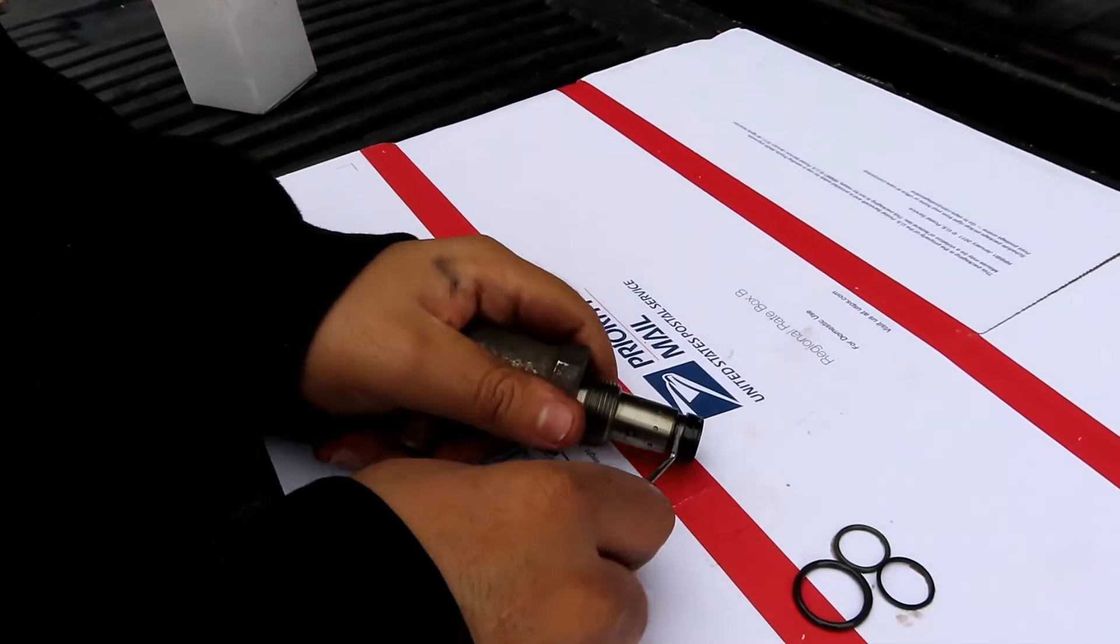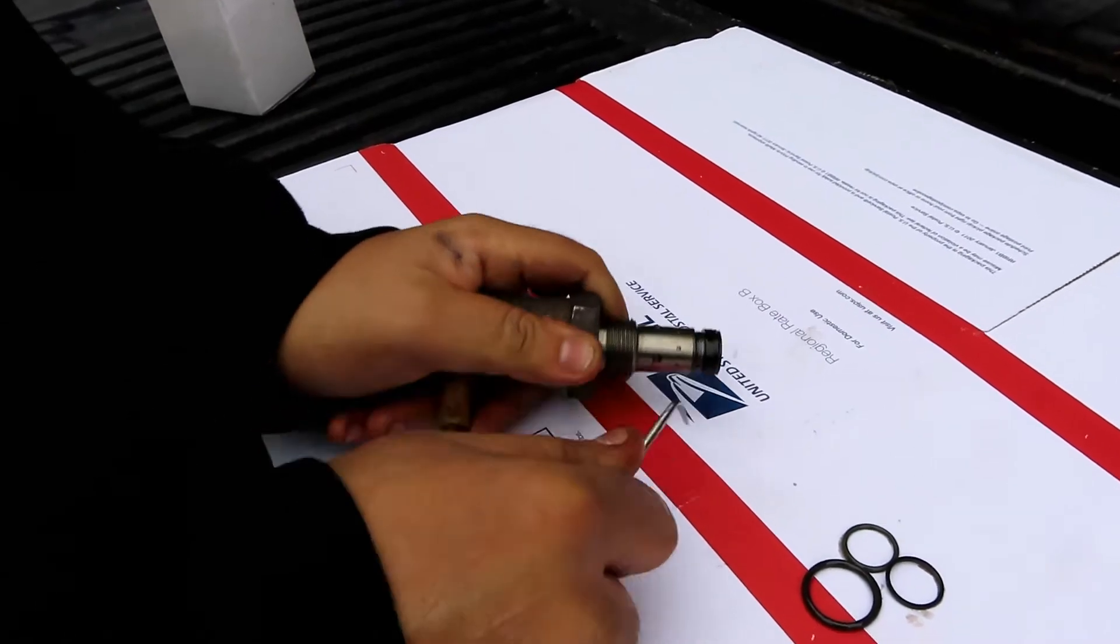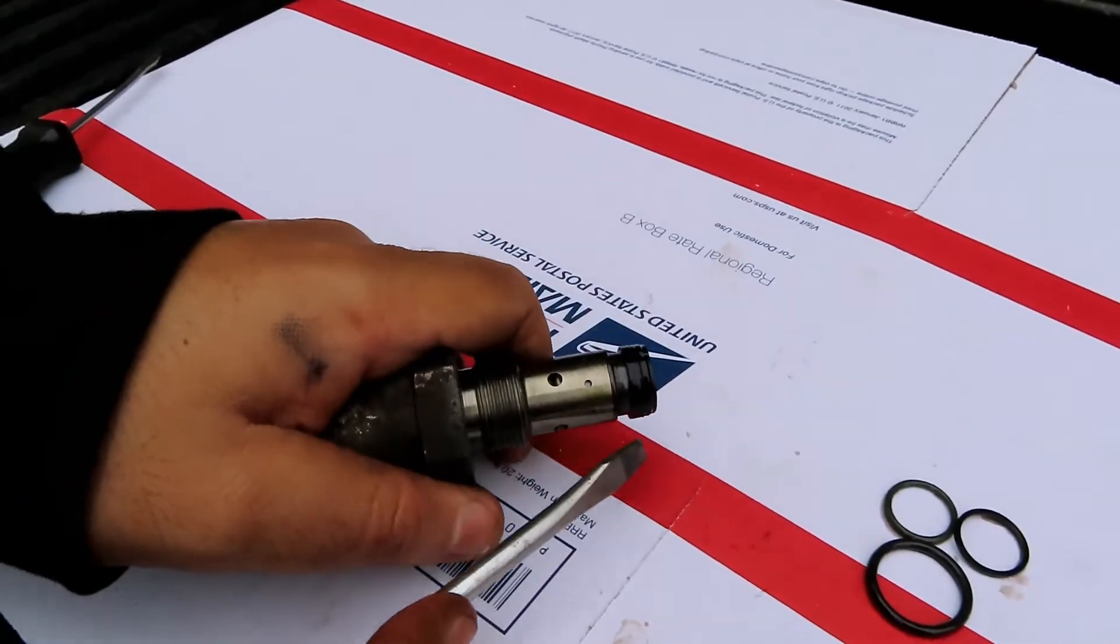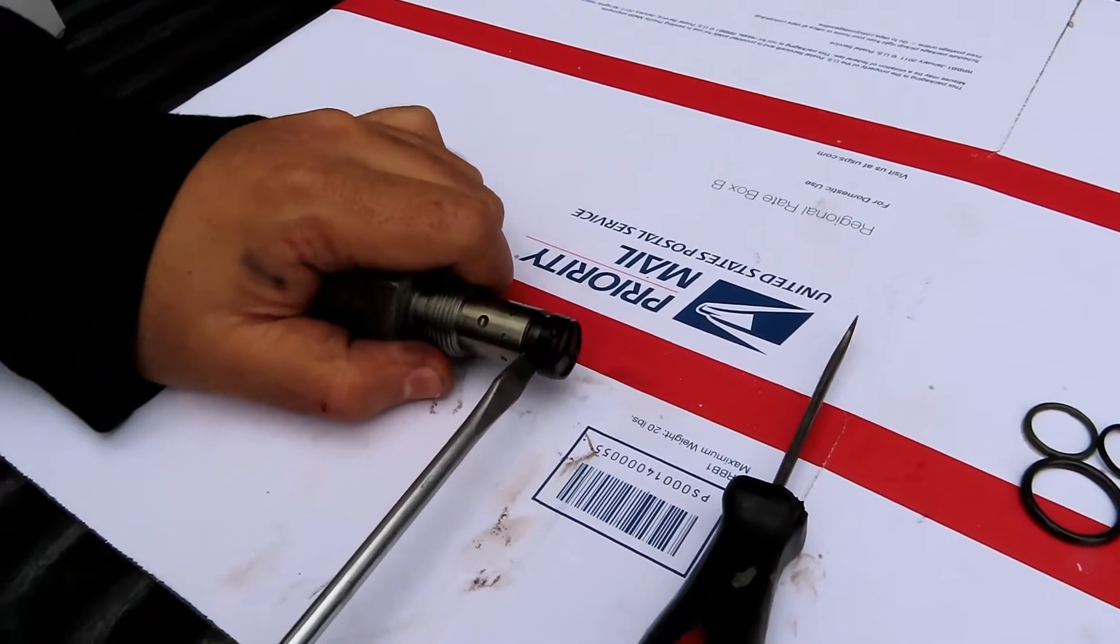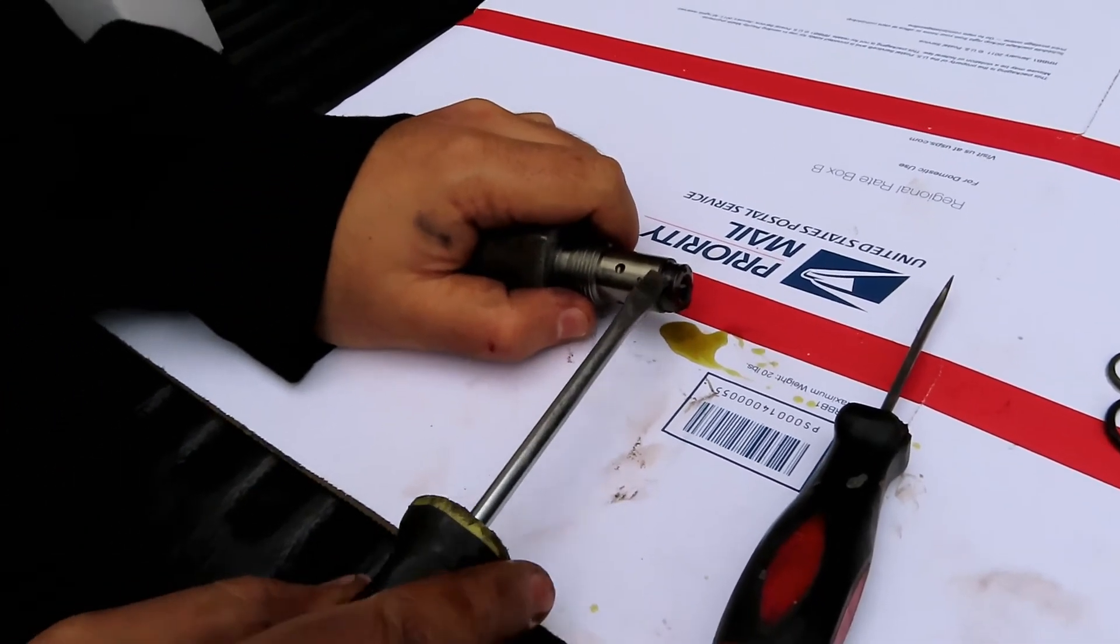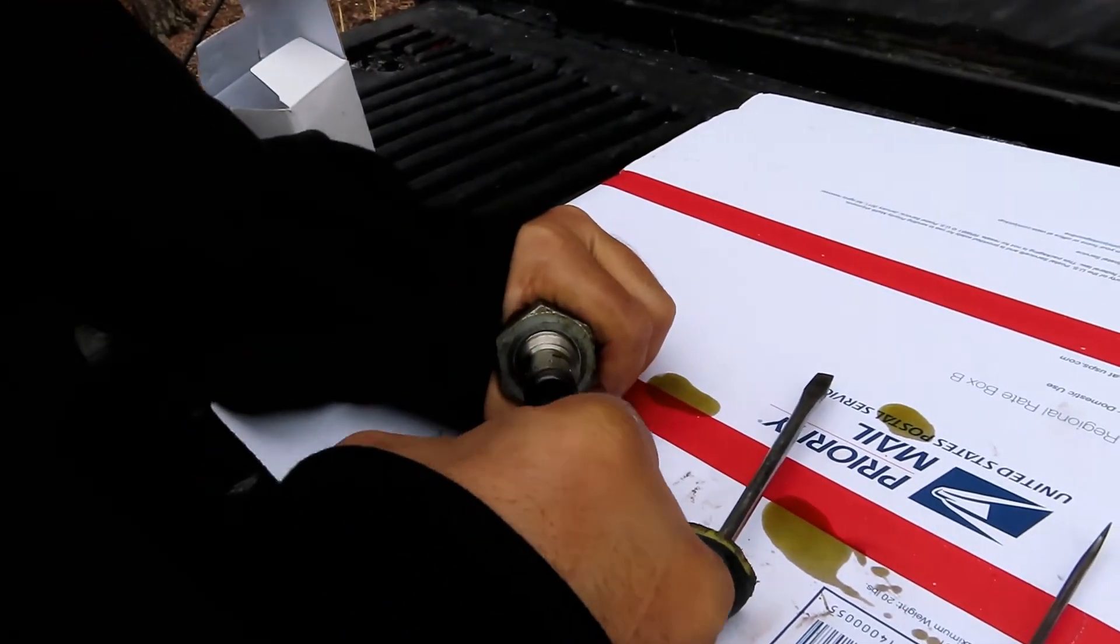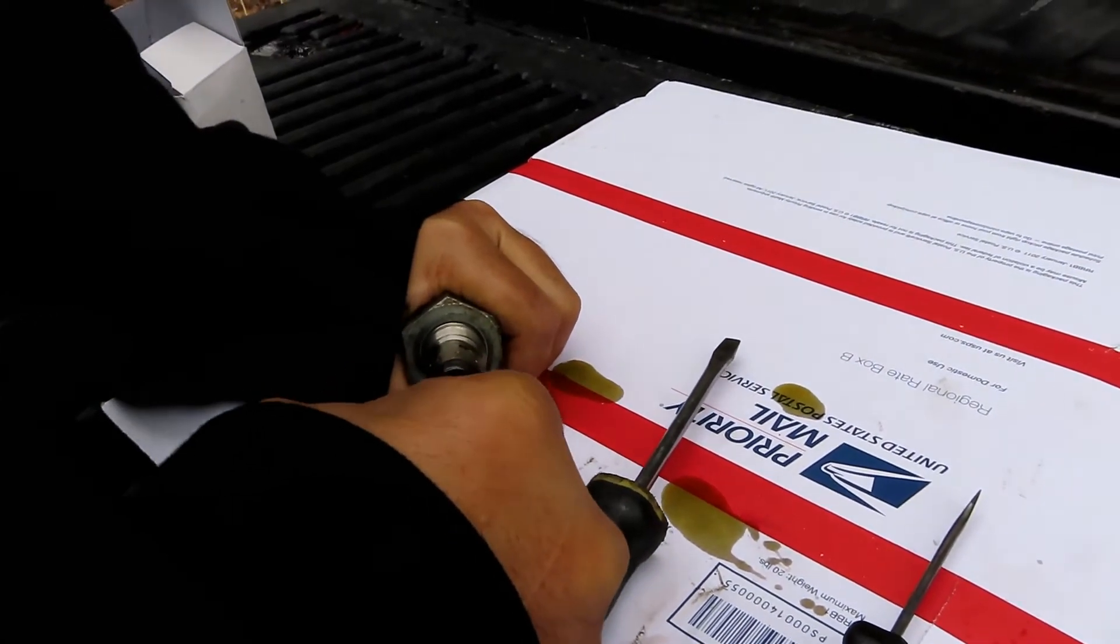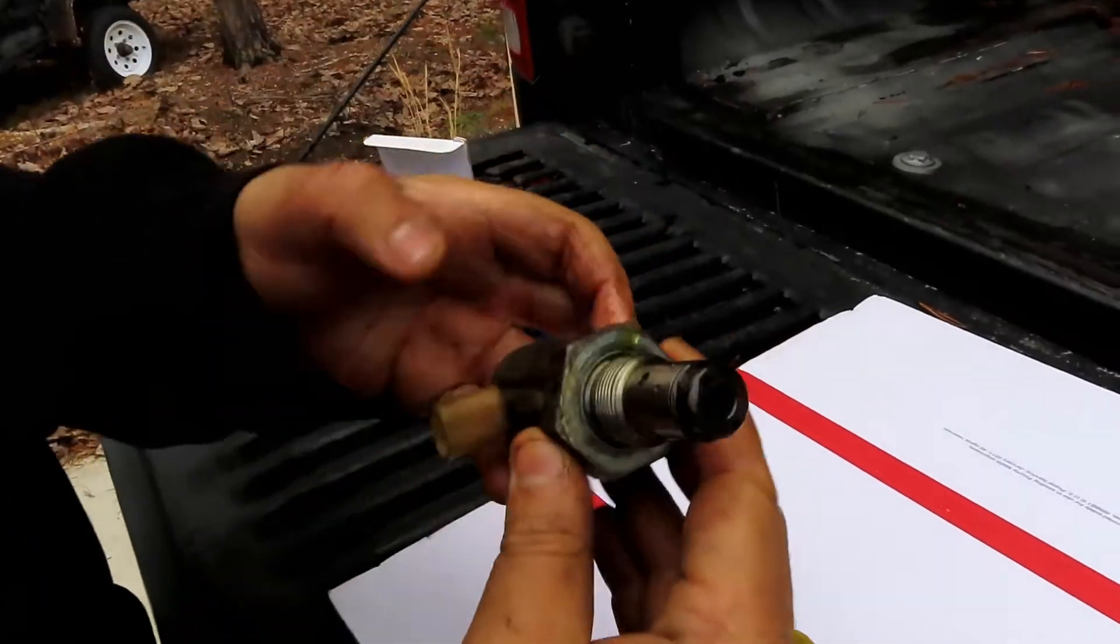Let me get a flatblade screwdriver to pop the tip off. There you go, I just put the screwdriver in and twist it like that and it popped out. Now push down with an Allen wrench to make sure your valve is working. Mine is fine.